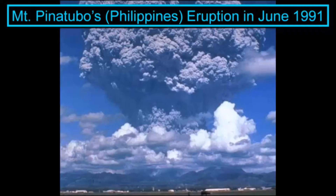One being the Mount Pinatubo eruption that happened in June 1991 — a massive, massive volcanic eruption. Billions of tons of magma was essentially brought to the surface and exposed as ash and dust into the atmosphere. Further, about 20 million tons of sulfur dioxide were produced from this natural example of pollution. We also had destruction of the ozone layer from this natural eruption.